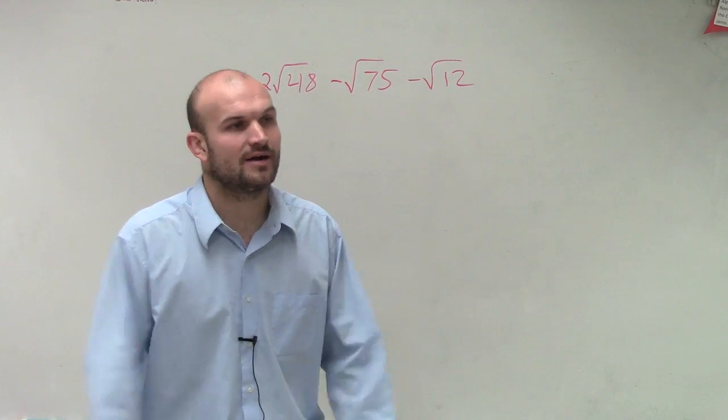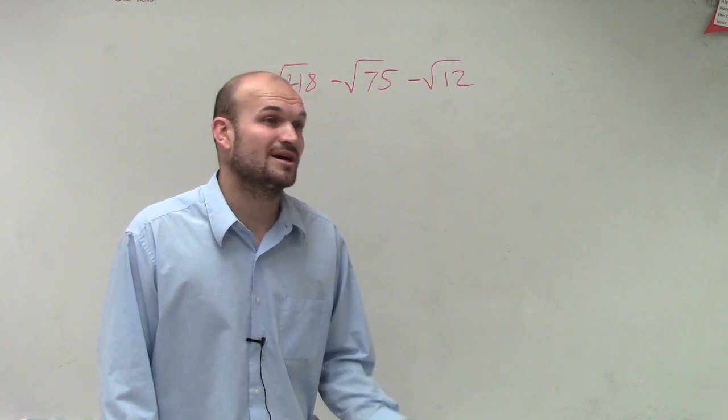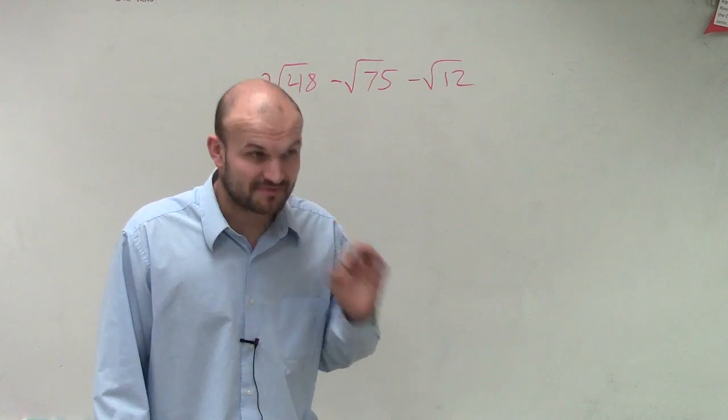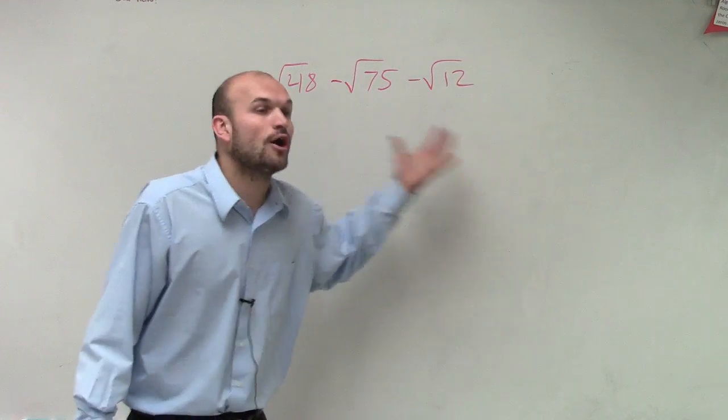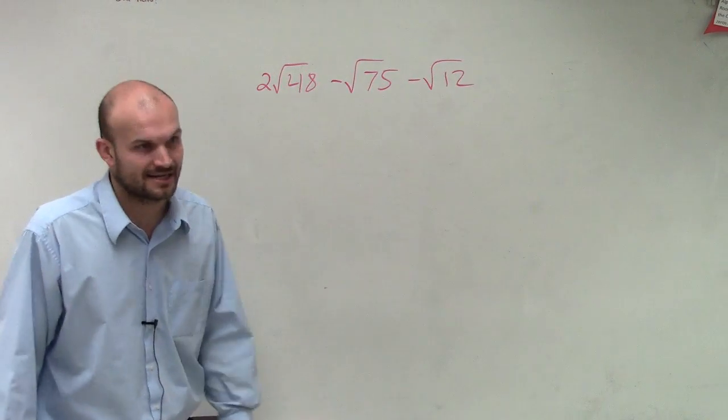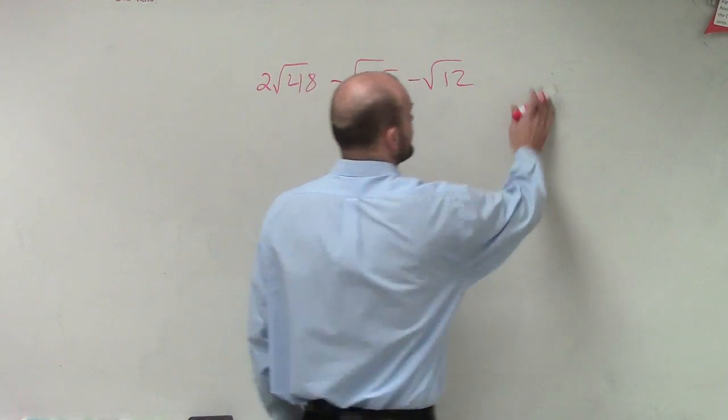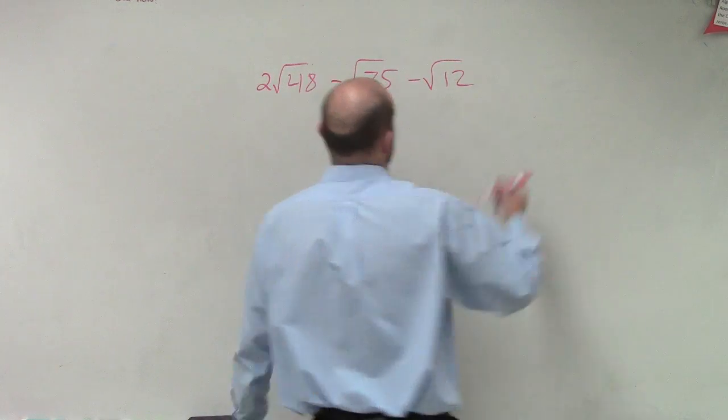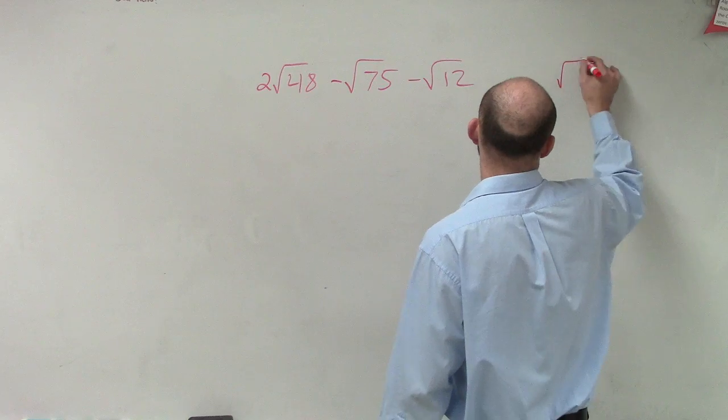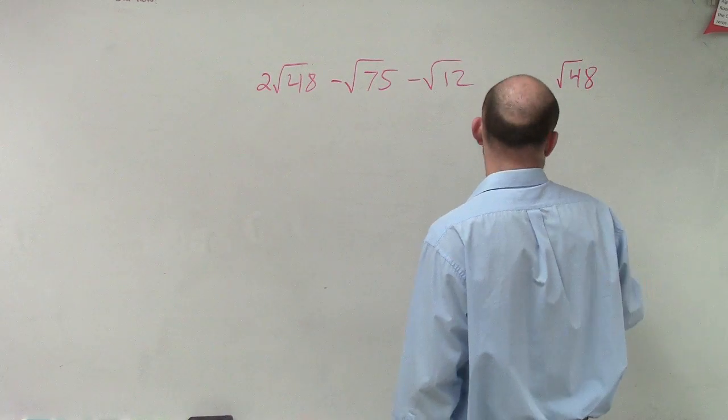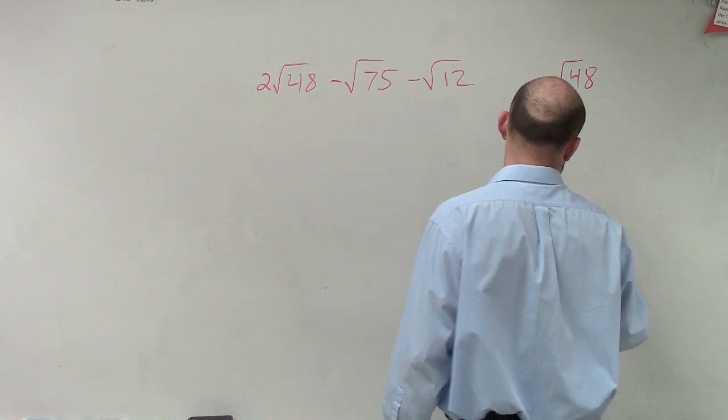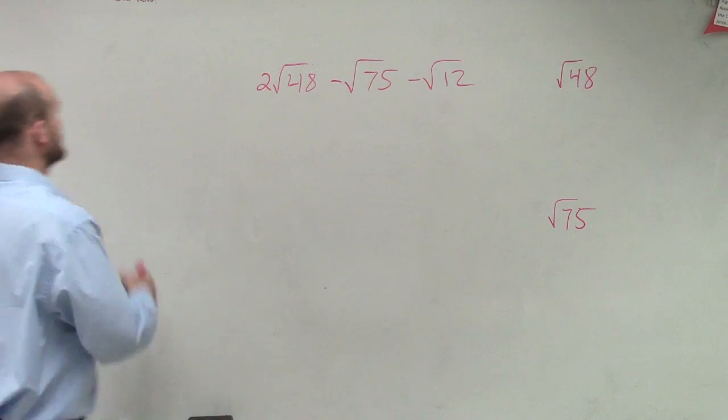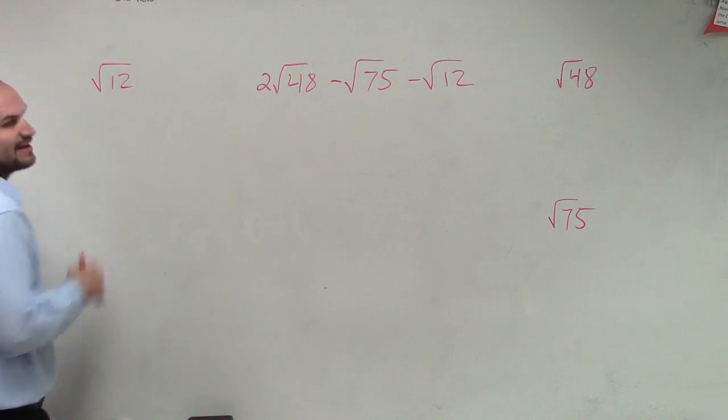Now let's just simplify our radicals. So that first question that we did, that becomes very important because now we're doing that over and over and over again, but then we're just adding an extra element to it. So let's do the square root of 48, the square root of 75, and then simplify the square root of 12. Now, square root of 12 we simplified last class period, right?